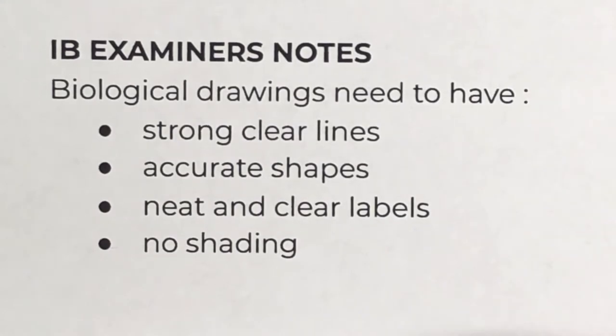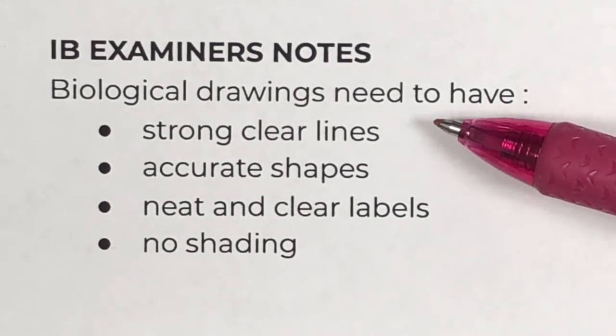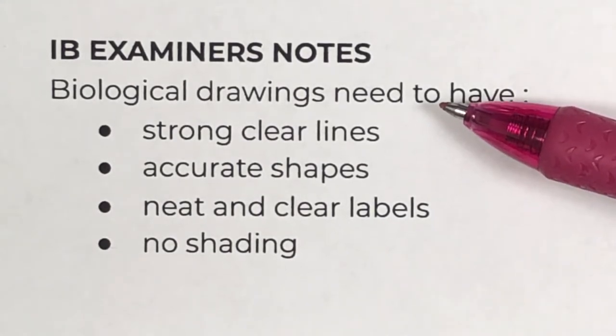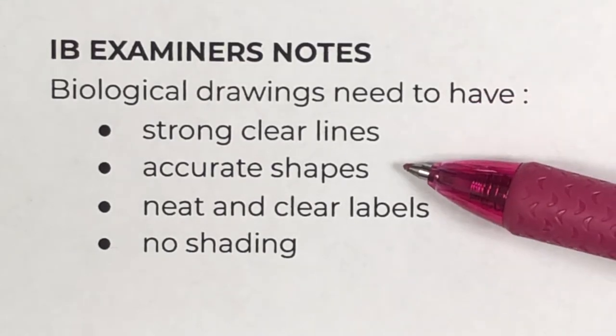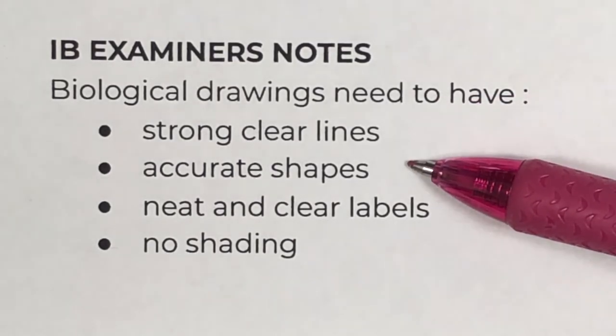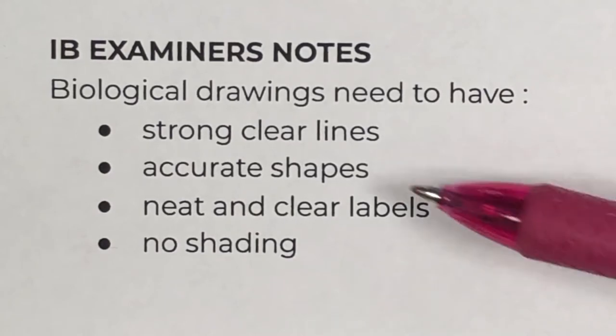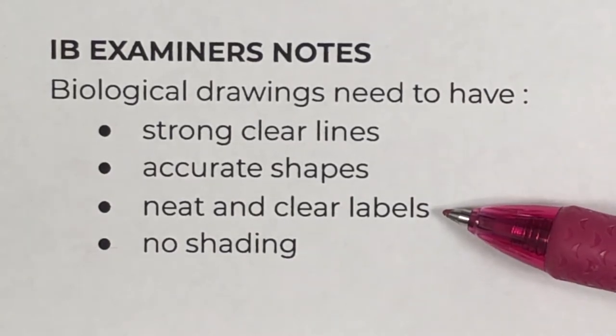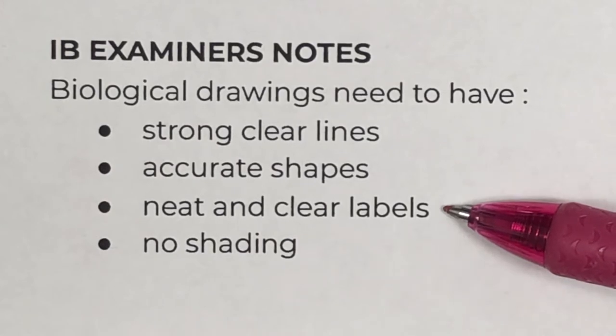Here's a few notes from the examiners. First of all, they want strong clear lines, so be defined. They want the shapes to be accurate, so make sure that if you are drawing a pentagon that it has the shape of a pentagon. They want all your labels to be neat and clear, so make sure that your writing is legible.